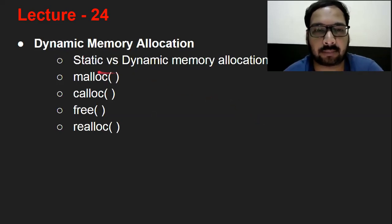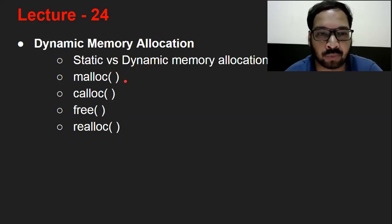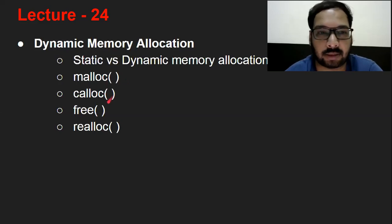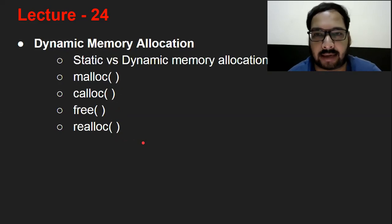First of all, we will see the static and dynamic memory allocation difference. Then, there are four predefined functions in dynamic memory allocation: malloc, calloc, free, and realloc. I will tell you in practical use.